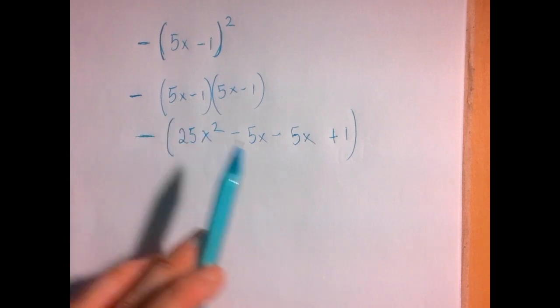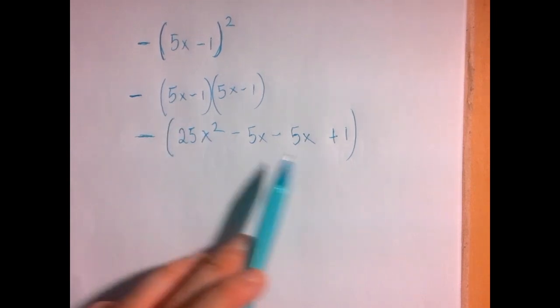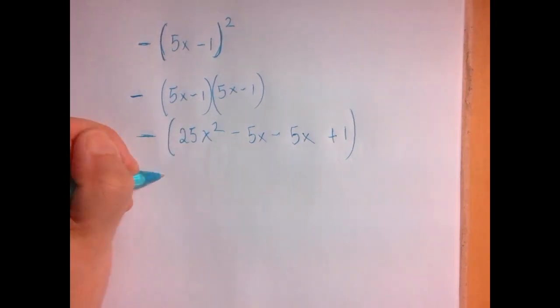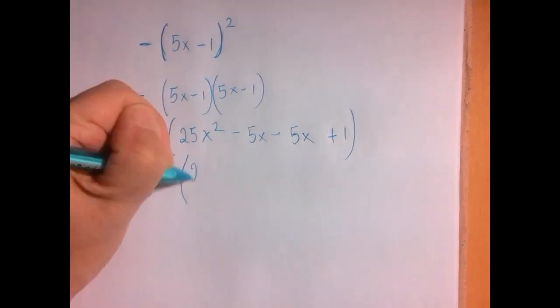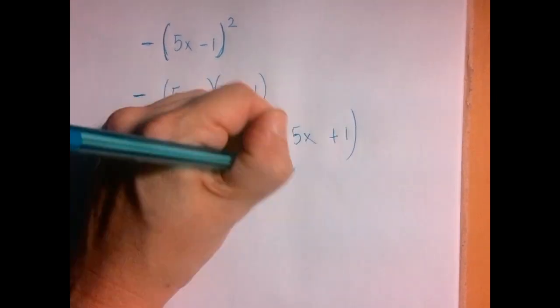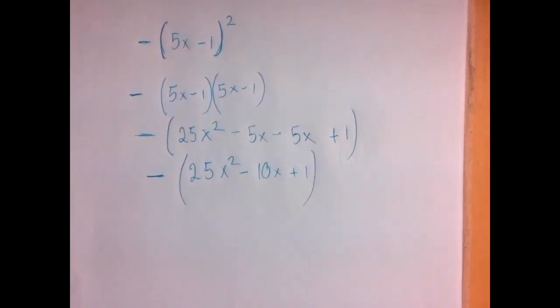In case of a complete square, O and I from FOIL are identical, so they double up. So we have the opposite of 25x squared minus 10x plus 1.